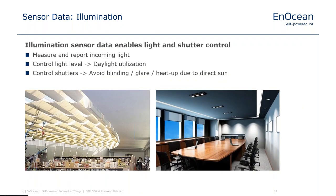Another use case enabled by STM 550 is measurement of illumination — the amount of light coming in from the sun through the window. Measuring available ambient light allows you to control your light levels so that when it's a very bright day and sunlight is coming in, you can automatically lower internal light levels, which is called daylighting. It also allows you to control your shutters to avoid blinding, glare, or heat buildup resulting from direct sun exposure.